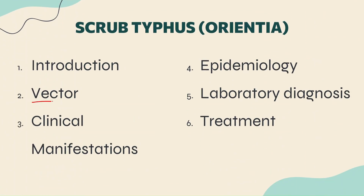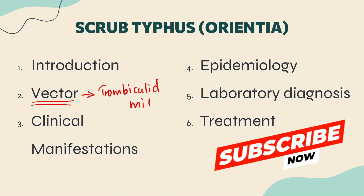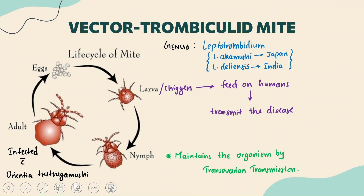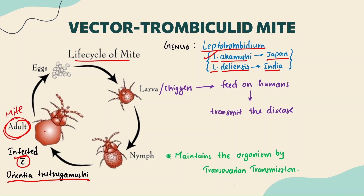The vector for Scrub Typhus is the trombiculid mite. The genus of this mite is Leptotrombidium. Two important species: Leptotrombidium akamushi, seen in Japan, and Leptotrombidium deliense, seen in India. The adult mite infected with Orientia tsutsugamushi lays eggs and transmits the organism to its offspring.